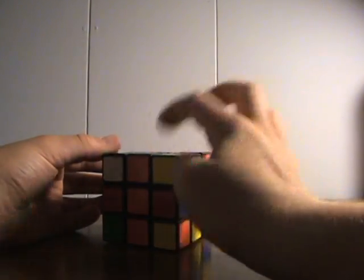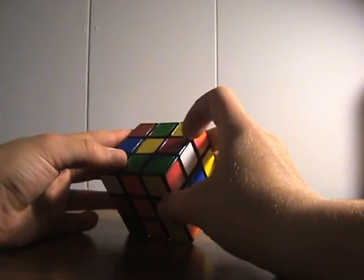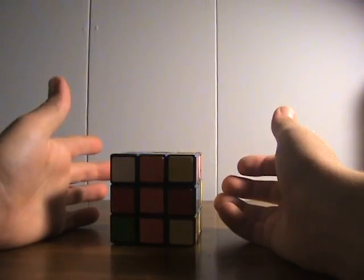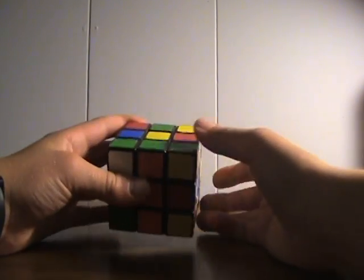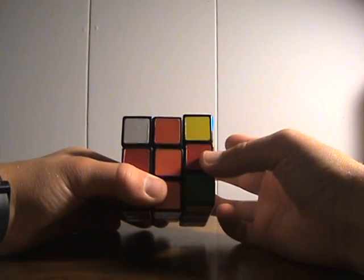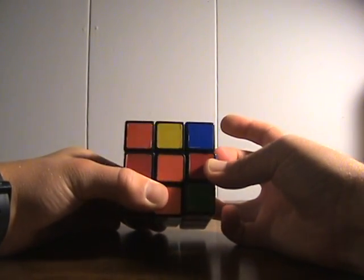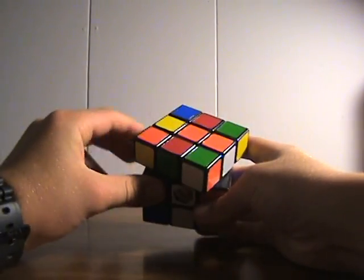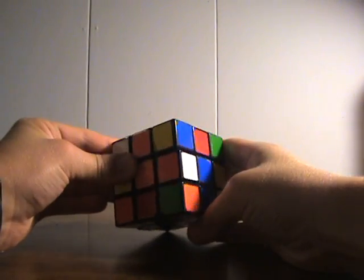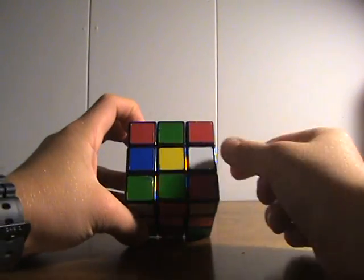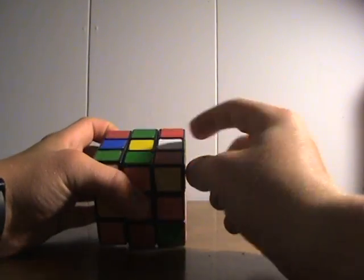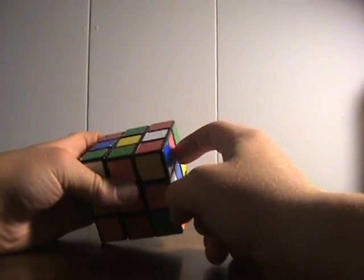But it is flipped the wrong way. White should be on the top instead of red. And there's a very simple algorithm you can use to fix this. It is R-I-U-F-I-U-I. And then that will flip around that edge piece so that you have white on the top instead of on the side.